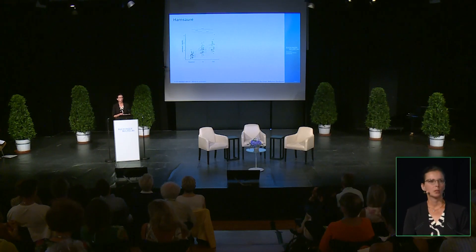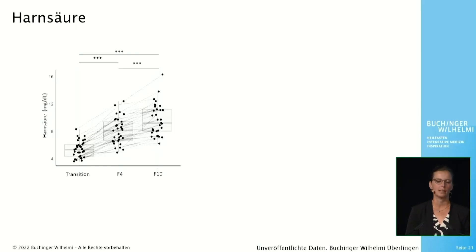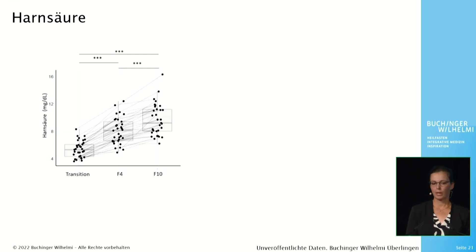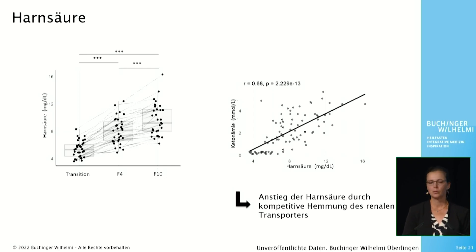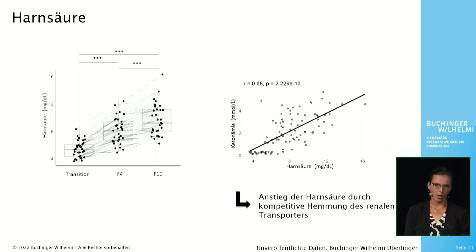I would like to share a final observation. Uric acid is known to increase during fasting, as seen impressively in the 32 subjects. We also saw that a stronger increase was detected in the group with high ketonuria. In a correlation analysis, we demonstrated a high positive correlation between uric acid and ketonemia. This is due to the fact that uric acid and ketone bodies are excreted by the same transporters in the kidney. The ketone bodies are preferentially excreted, resulting in competitive inhibition of uric acid excretion and thus an increase in uric acid in the blood.